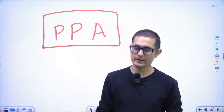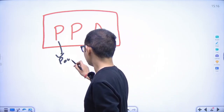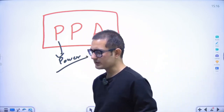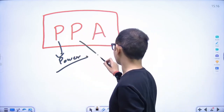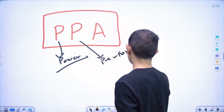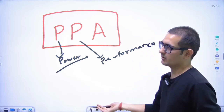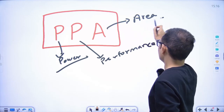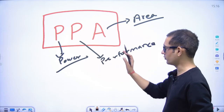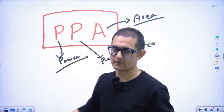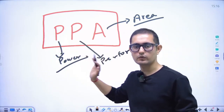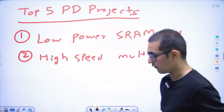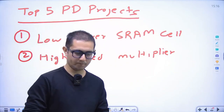PPA is very very important in physical design. Power should be low — there are low power optimization techniques like clock gating, power gating, and others. Performance should be high — performance means speed, bandwidth, or whatever the design requirement is. Area should be low. All three things work in an optimization manner — we have to focus on all three, not just one. We work in a balanced and sustainable manner on all three.